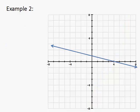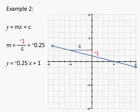Another example: if I go 4 across then it goes down 1. So my rise is not a rise, it's a drop, so it's minus 1 over my run of 4, which gives me a gradient of minus 0.25. And that's the equation of my line.